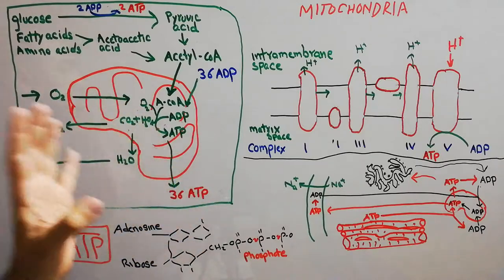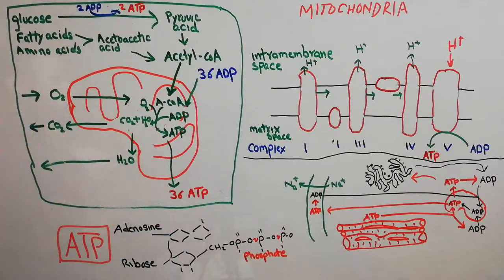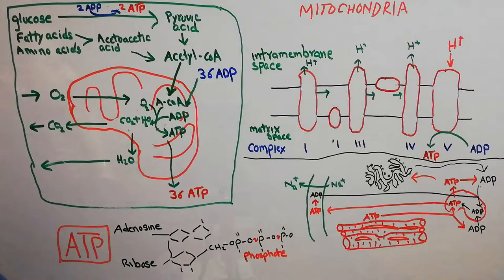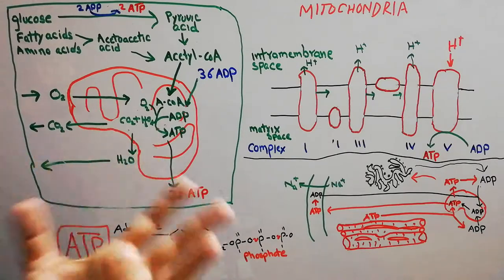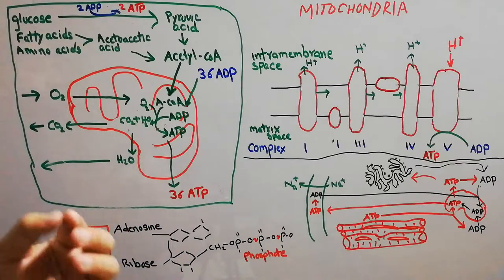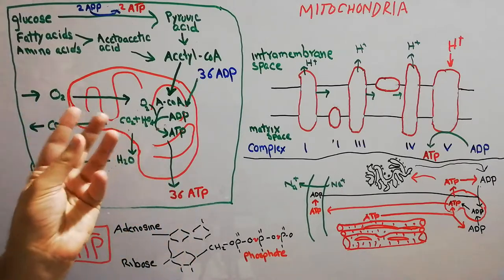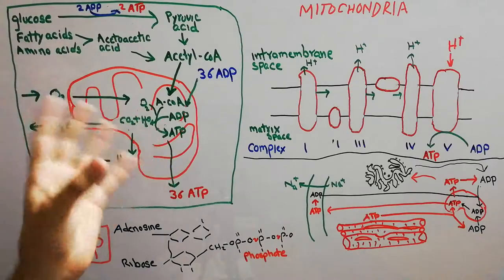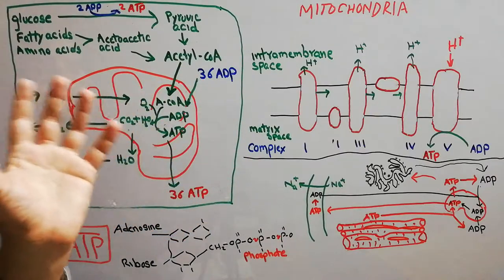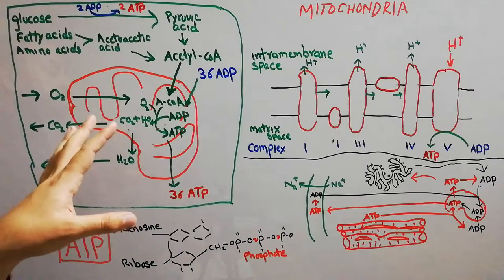The importance of mitochondria is that it helps in the provision of energy — it provides energy in the form of ATP. The size, shape, and number of mitochondria varies from cell to cell. Cells that are growing will have a lot of mitochondria; some will be large, some small. Some cells will have hundreds of thousands of mitochondria, while cells with low energy requirements will have fewer. The shape may be filamentous, branched, or globular.